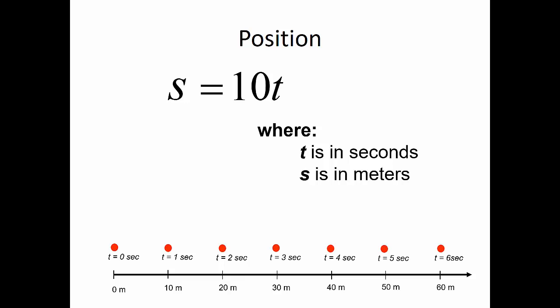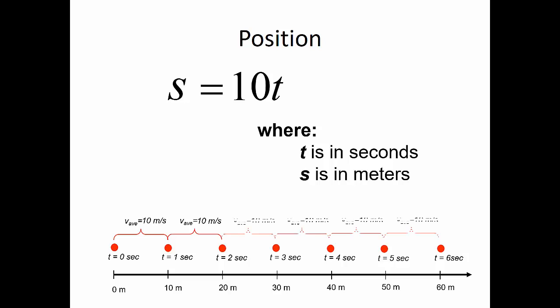Looking at those different periods of time and distances traveled, I can find an average velocity for each interval. From zero to one second, I traveled 10 meters in one second, so my average velocity is 10 meters per second. From one second to two seconds, I again traveled 10 meters in one second, giving an average velocity of 10 meters per second — and so on throughout the rest of the travel. So my average velocity for the whole trip was 10 meters per second.